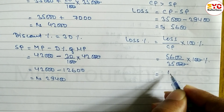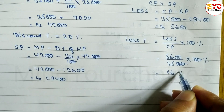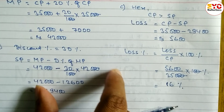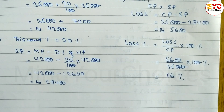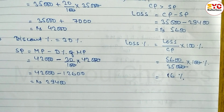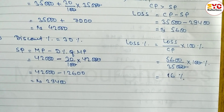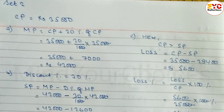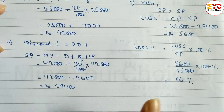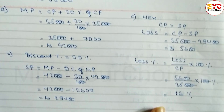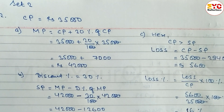5,600 divided by 350 gives 16. So loss percentage is 16%. Write the answer as 16%. In the exam, follow the same process — for four-mark questions you can score four out of four, and for three-mark questions three out of three. This was question number two from set two. Hope you understand.